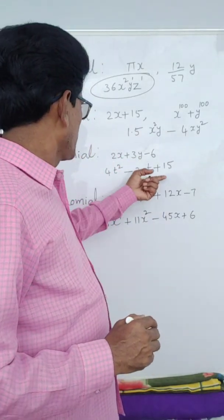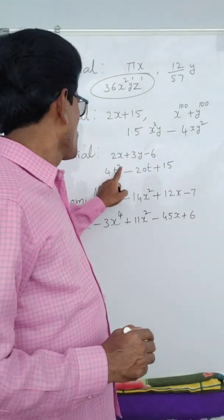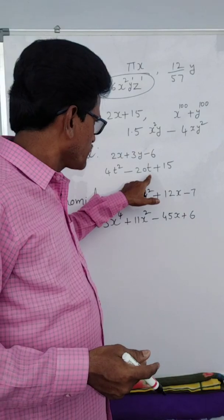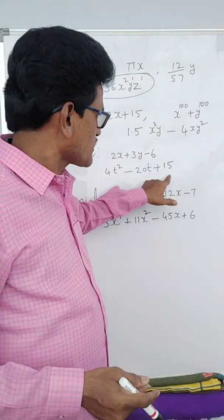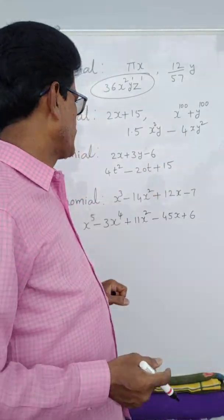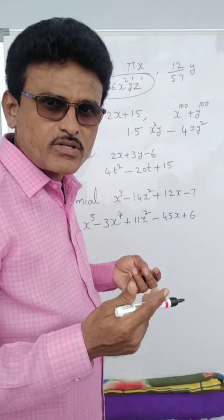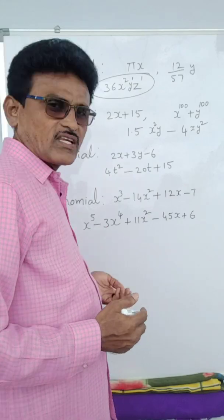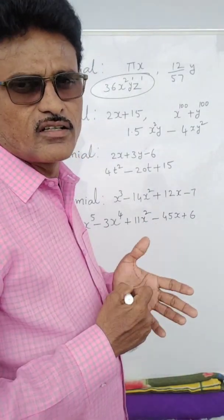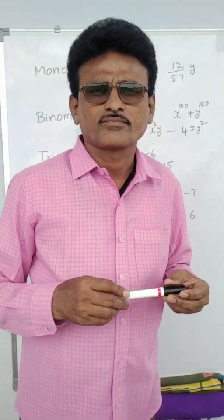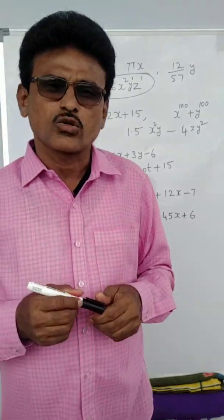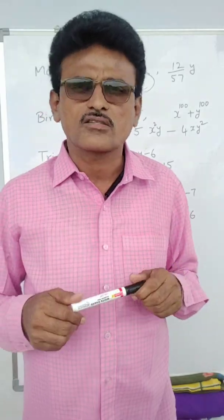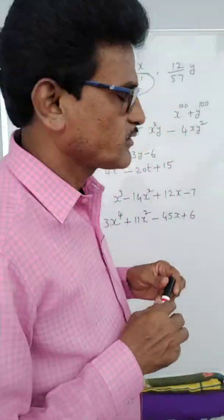Here degree is 2, highest power 2. Coefficient of t² is 4, coefficient of t is minus 20, constant term is 15. Three terms means trinomial. Like this they can ask questions. If you like my channel you can subscribe, share your comments, and ask doubts in the comment box — I will reply also. Thank you.